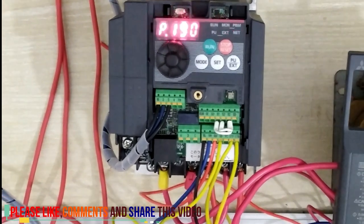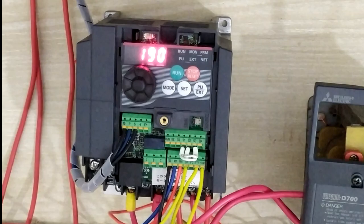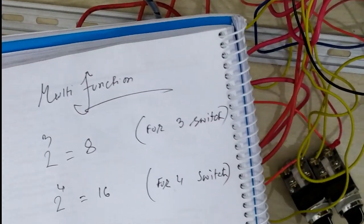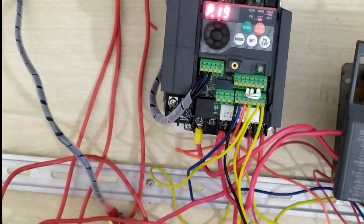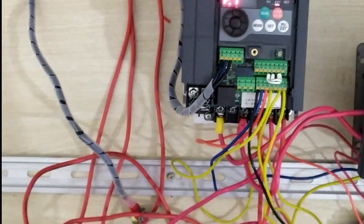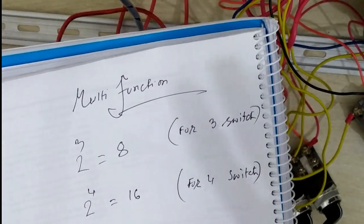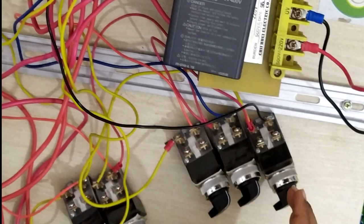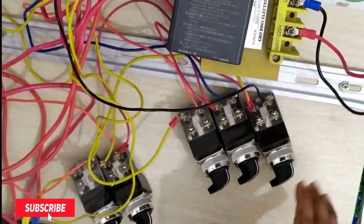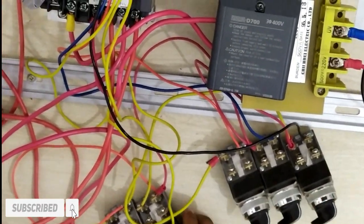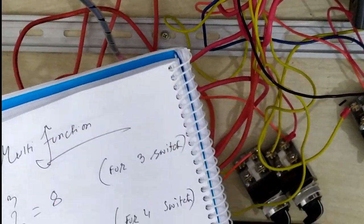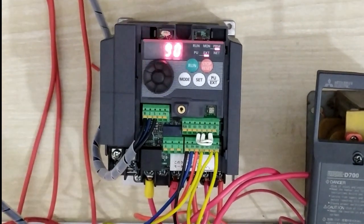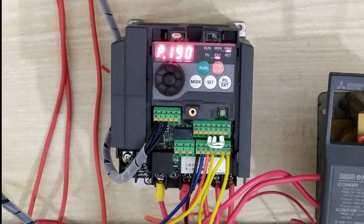I want to describe what is the multi-speed function and how to set your switches by multi-functions. We have 3 switches: RM, RL, and RH — that means 3 switches are selected and set here. The 4th is for reverse direction. We are controlling up to 50 Hz using 8 types of frequency, variously, specifically, or individually.